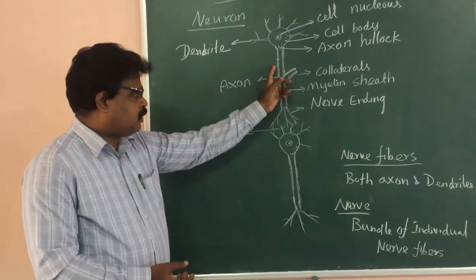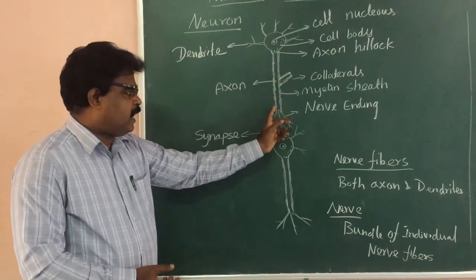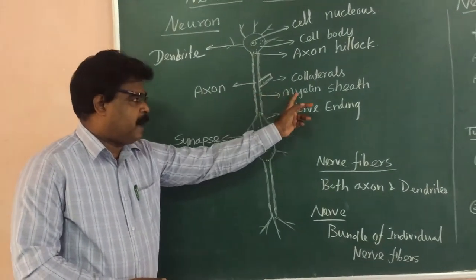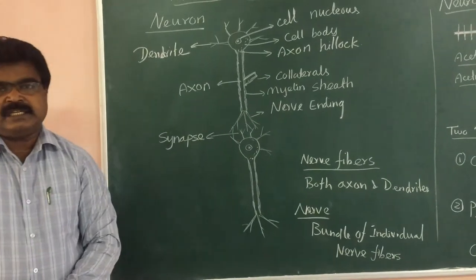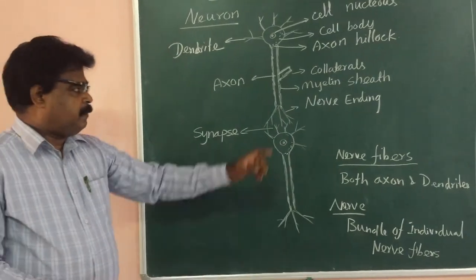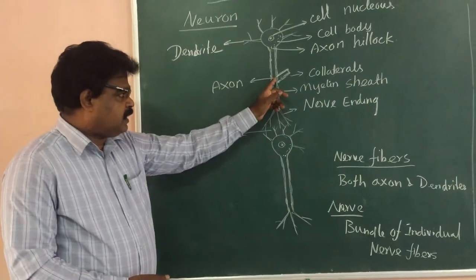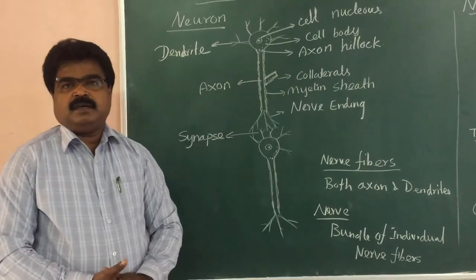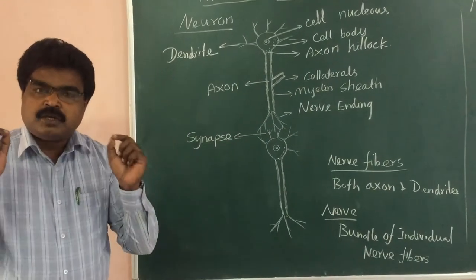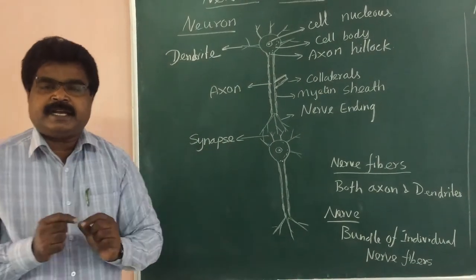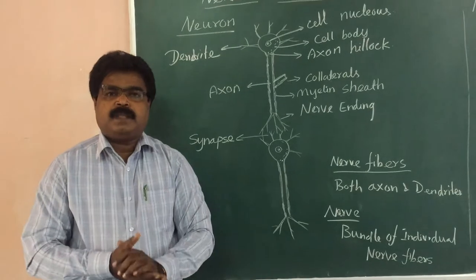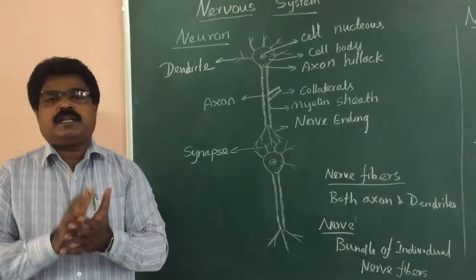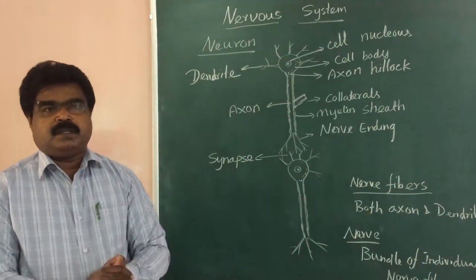Most of the neurons are coated with a fatty substance called myelin — it is called the myelin sheath. The main branch of the axon is called collaterals. The axon and dendrites together are called nerve fiber, and the bundle of individual nerve fibers is called a nerve.